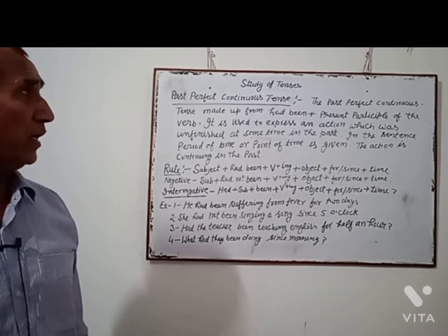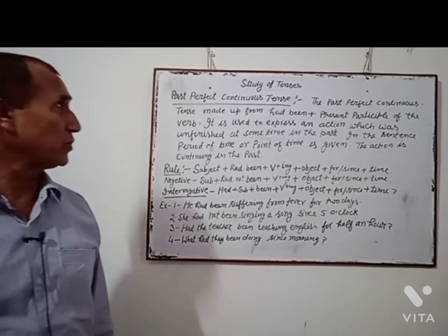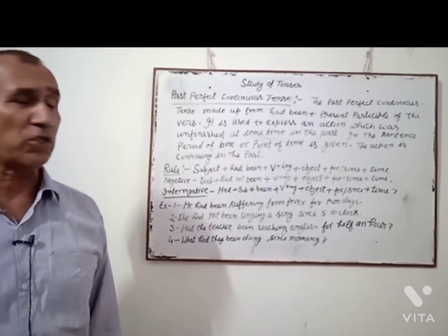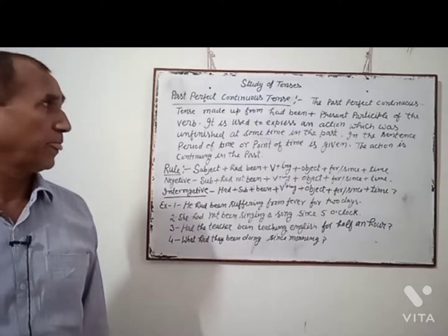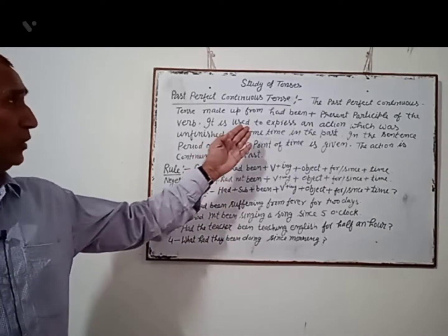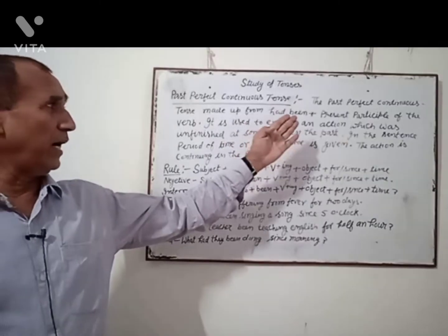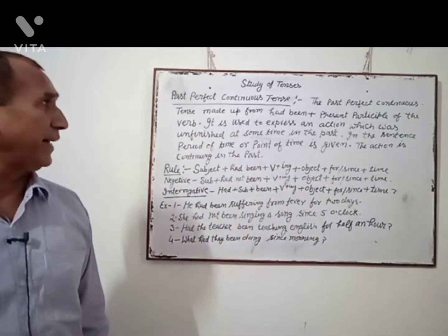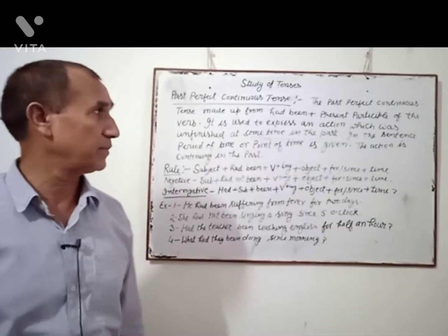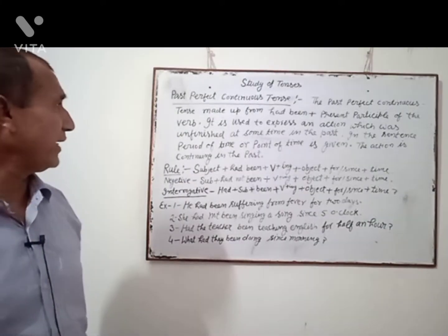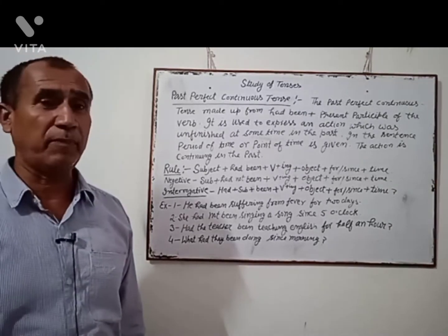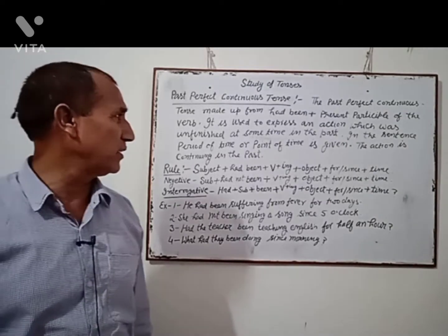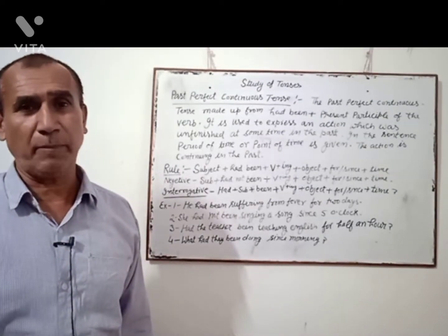The Past Perfect Continuous Tense is made up from had been plus present participle of the verb. It is used to express an action which was unfinished at some time in the past. In the sentence, a period of time or point of time is given, and the action is continuing in the past.